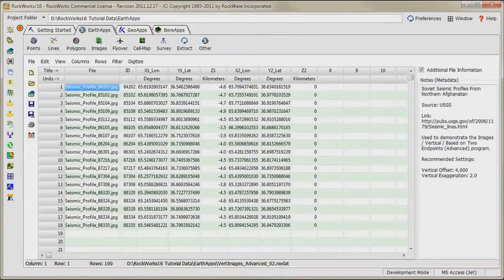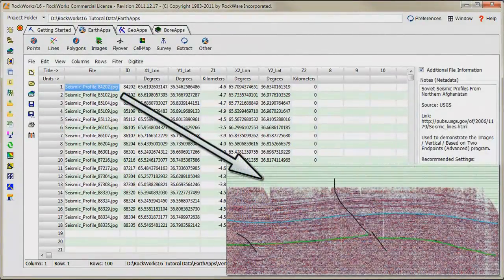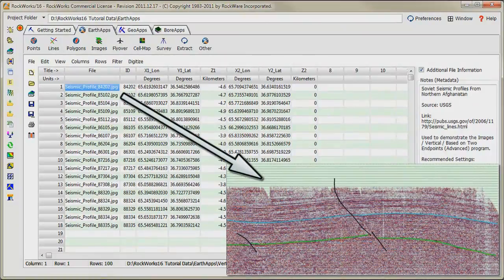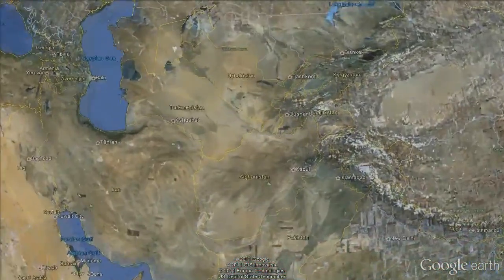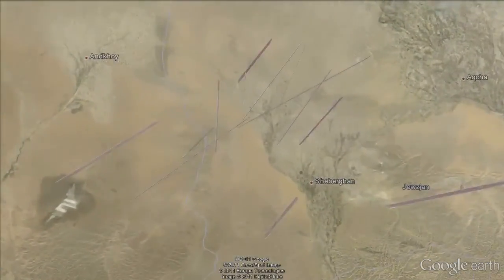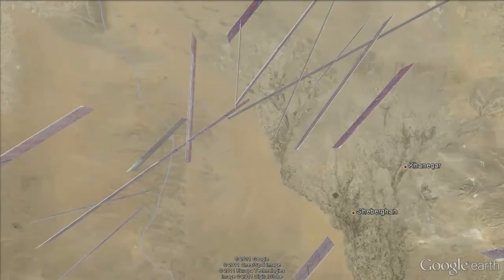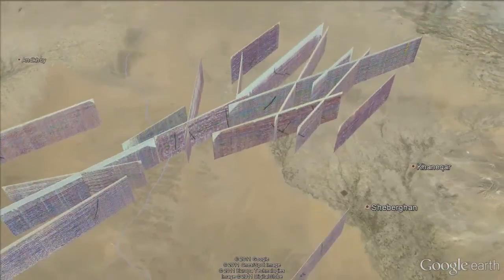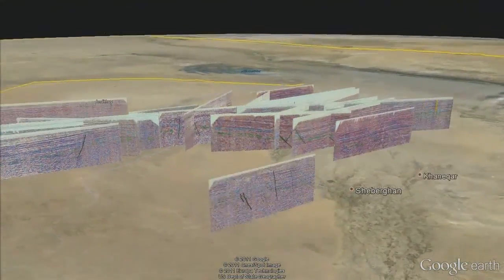In this second example, a list of seismic profile bitmaps have been entered and processed in a similar fashion. These profiles were shot in northern Afghanistan by Russian geophysicists in the 1980s.